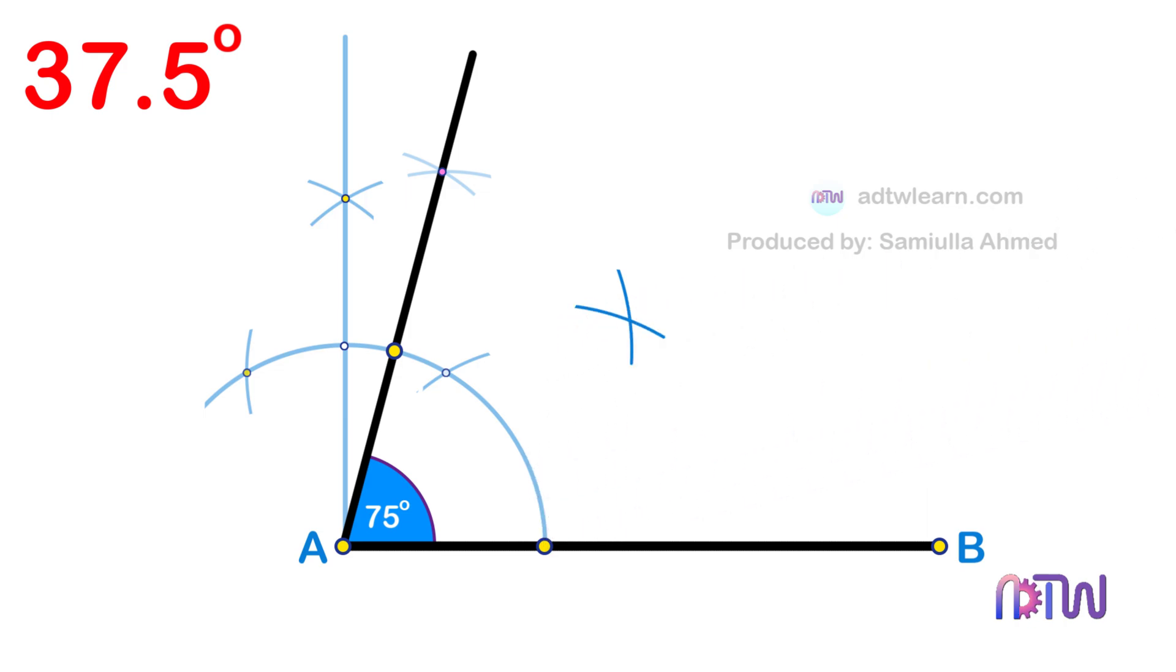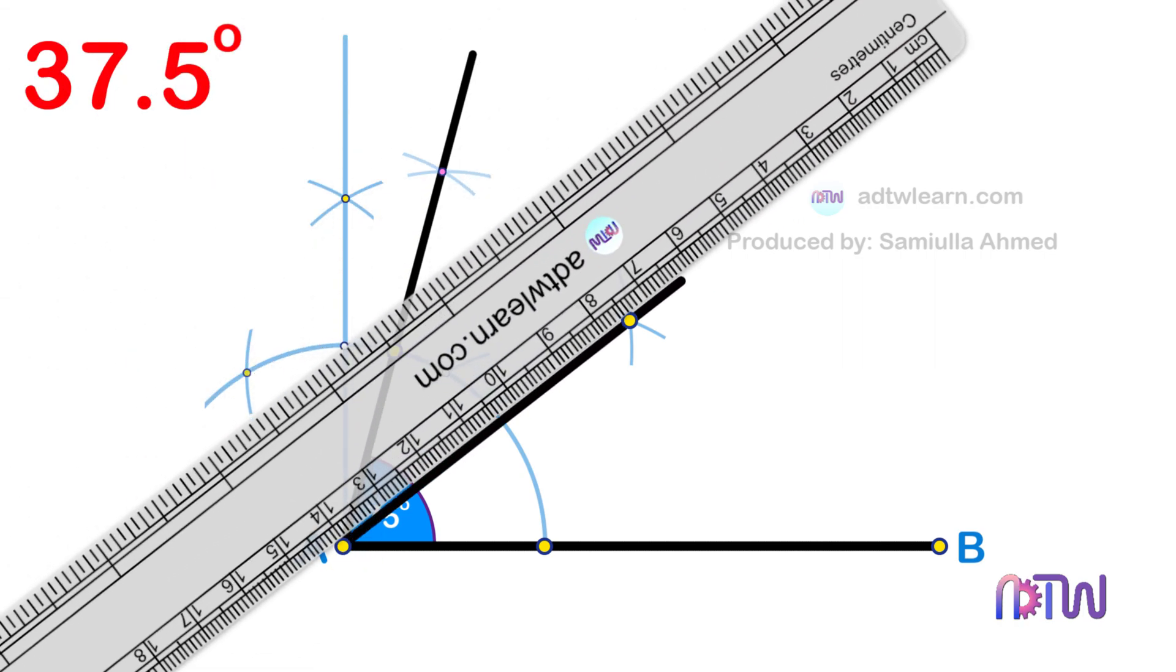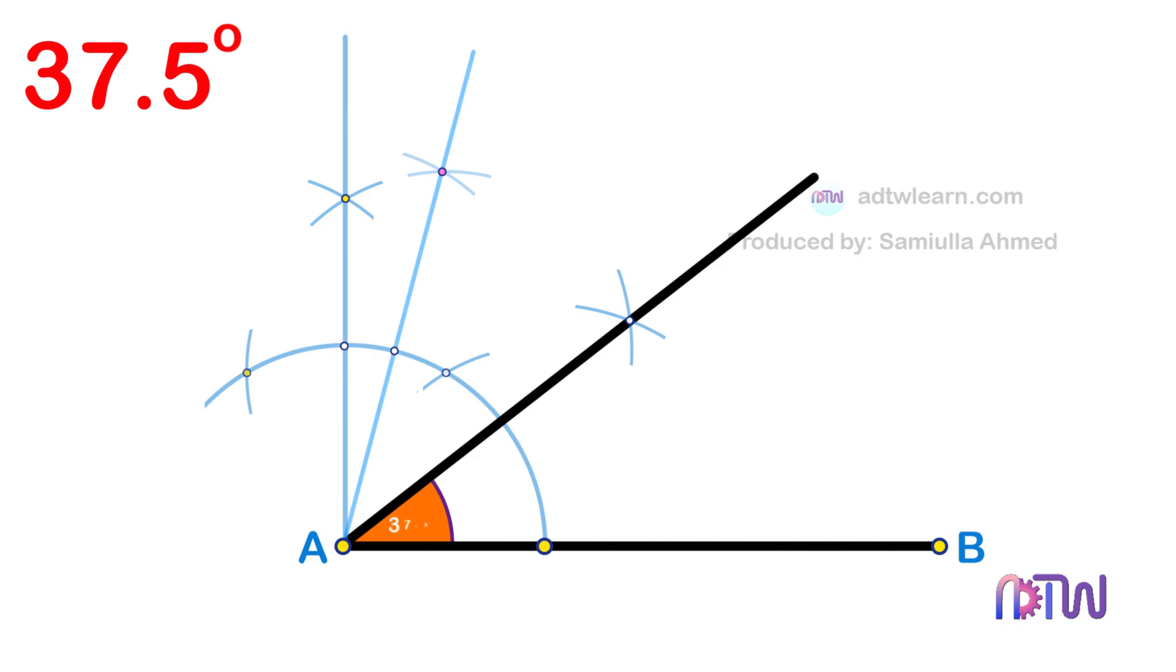In the end, draw a line passing through this intersection point from the endpoint A of the line segment. This line will be inclined at the required 37.5 degree angle. You can cross-check by using a protractor.